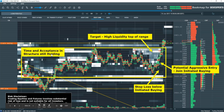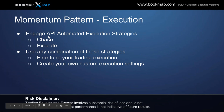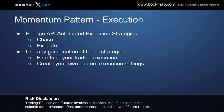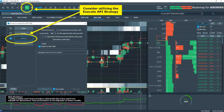Previously we were looking at time and acceptance, stop loss below here, joining in here, looking for the first target maybe up into that area, but looking for continuation. To incorporate the API automated strategies in this case, we're going to look at just two — not Escape, just Chase and Execute. You can look at any combination: all selected, none selected, or just one. They all work together as they were designed. You can fine-tune your trading execution with the custom settings within the inputs. We'll look at the Execute strategy to get very aggressive — check the boxes to enable it and set your limit order.